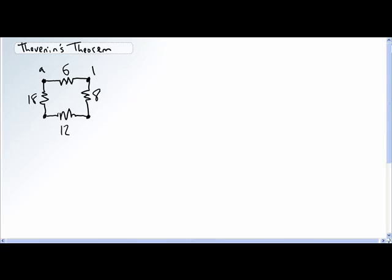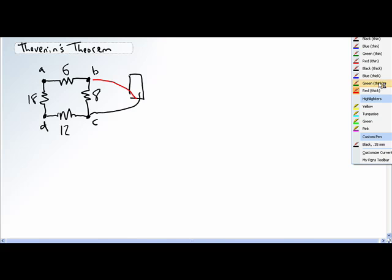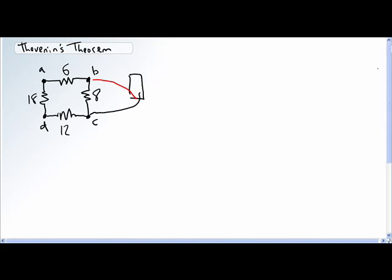We've got A, B, C, and D. Now, if I was to hook my ohm meter up here, what is the resistance that the ohm meter sees?